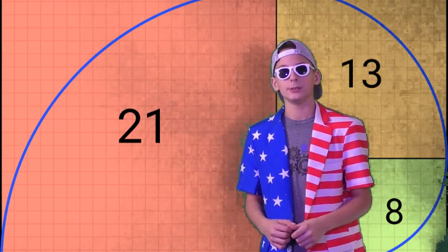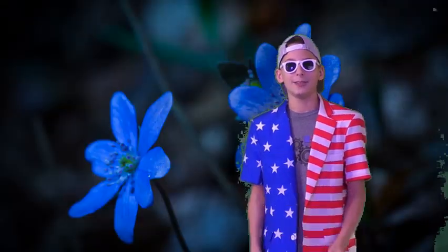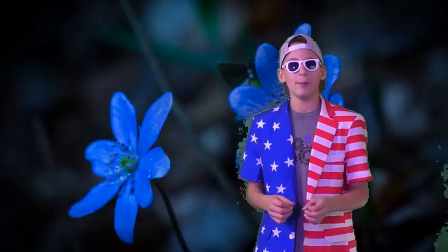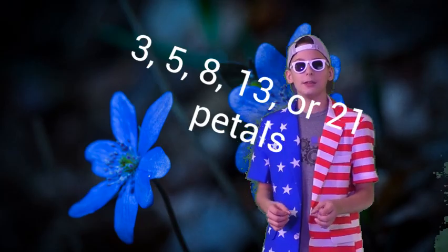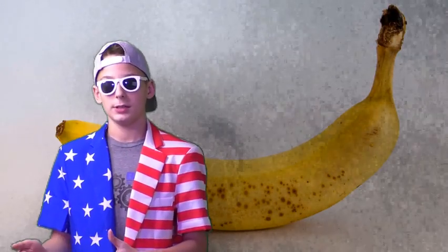Numbers can be found in flowers. It doesn't matter which flower you look at, but most likely it has 3, 5, 8, 13, or 21 petals. The Fibonacci sequence can not only be seen in flowers but in so much more. If you cut a banana, it has 3 sections. If you cut open an apple, you can see it has 5. Pine cones, rose seeds, and sunflowers always add up to Fibonacci numbers.